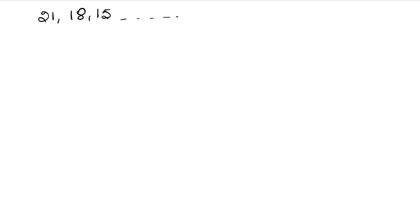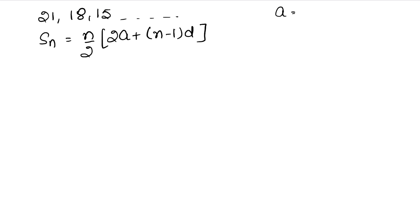सबसे पहले अपनी AP लिख लेते हैं। AP है 21, 18, 15 and so on। हम sum करेंगे की sum 0 आ जाए। SN का formula होता है: n by 2 into 2a plus n minus 1 into d। A है हमारा 21 और D है 18 minus 21 = minus 3। 15 में से 18 घटाएं तो भी minus 3 आता है। तो d = minus 3 है।